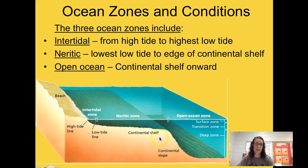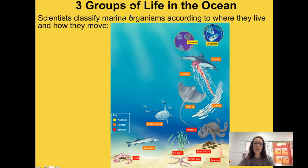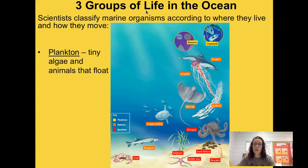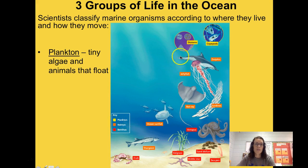Some organisms live typically in the neuritic zone and some in the open ocean zone — you'll learn more about that in the next couple of notes. There are three general groups of life in the ocean. The first is plankton — these are usually tiny algae that float near the surface of the ocean. In this diagram, plankton are shown in yellow, and you can see diatoms and copepods.